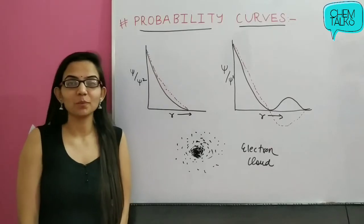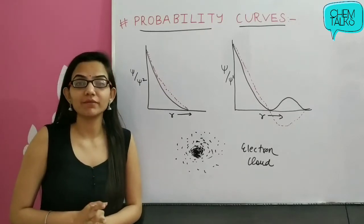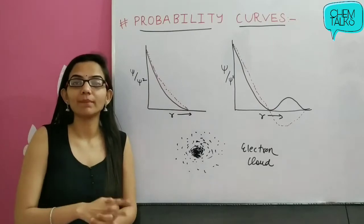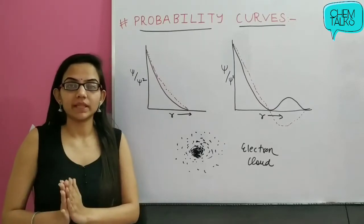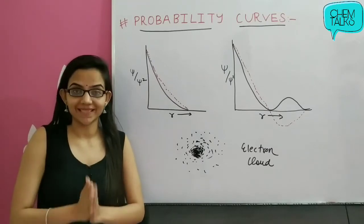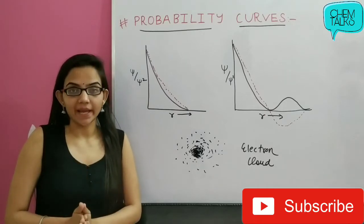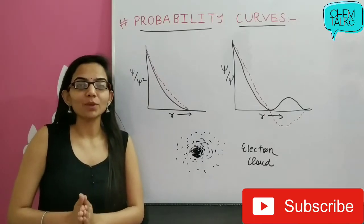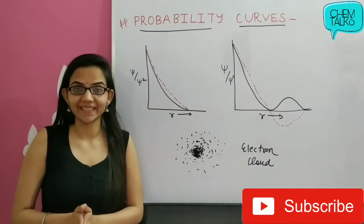Hi everyone, welcome back to my channel ChemTalks by Pooja Malik. In today's video, we are going to discuss a very different topic: probability distribution curves. Basically, we learn how to determine in which region an electron around the nucleus has the highest probability. We learn this from probability distribution curves. In this video, we will clear this topic.